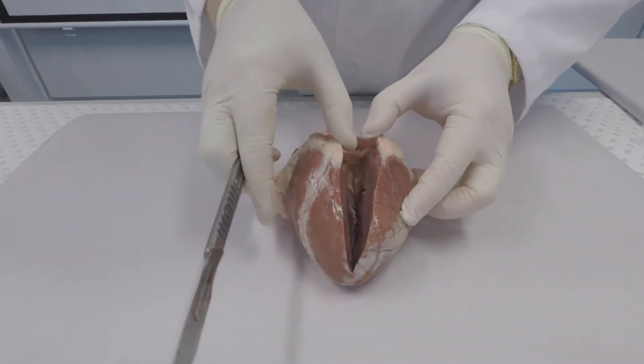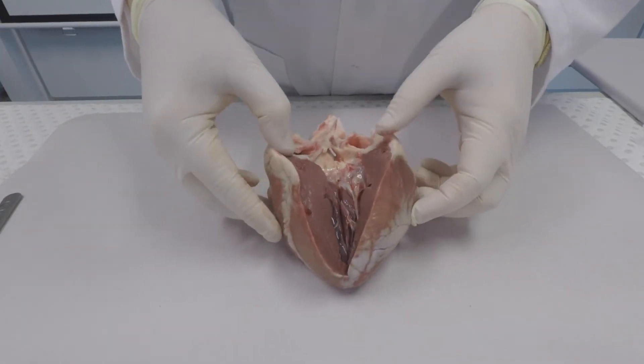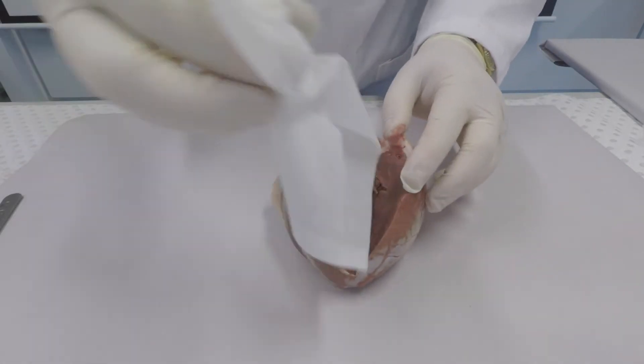The veins then return the blood to the heart and these contain valves to prevent the blood flowing backwards. That's why they are dark colored and not as muscular.